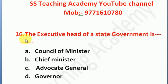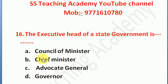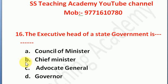Question number 16: the Executive Head of the State Government is — Option A: Council of Ministers, Option B: Chief Minister, Option C: Advocate General, Option D: Governor. The right answer is Option B — Chief Minister is the Executive Head of the State.